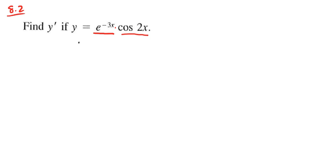We have two rules to focus on here. First is the product rule - we have e to the negative 3x times cos 2x. We also need to remember the chain rule when taking the derivative of each function. Those are the two rules we're going to focus on.